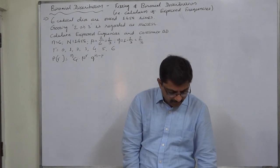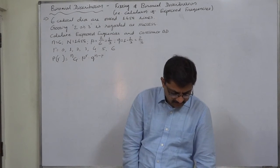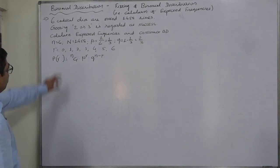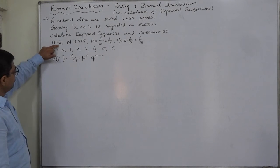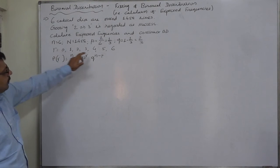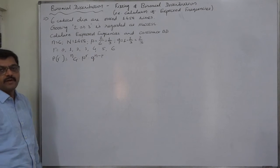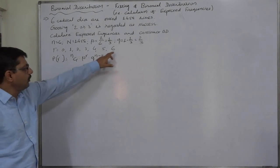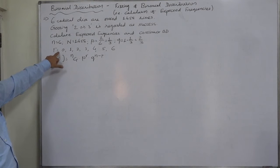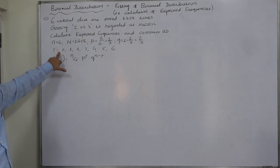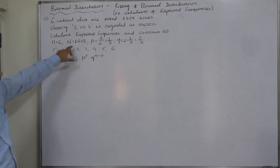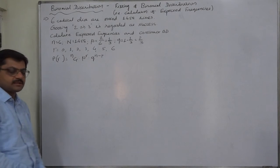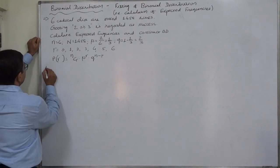We need to find the probability of different numbers of successes and their expected frequencies. Since small n is 6, R can be 0, 1, 2, 3, 4, 5, or 6. We calculate the probability of all seven mutually exclusive and exhaustive outcomes. Multiplying each probability by N gives the expected frequency.